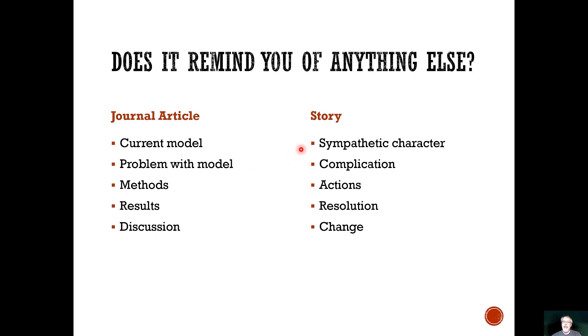Here, where we had a sympathetic character in a journal article, we're talking about some current model of the universe. The complication of the story is really no different than the problem with the model that's elucidated in the introduction. Where we have actions in the story taken by the character, the researchers perform some set of actions themselves in order to address the problem with the model.